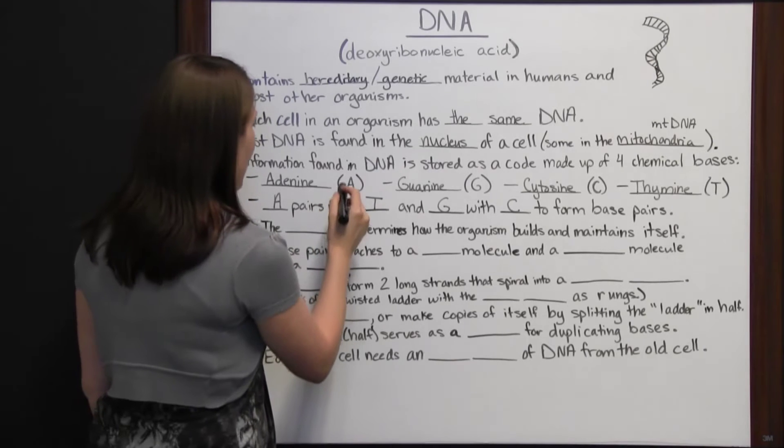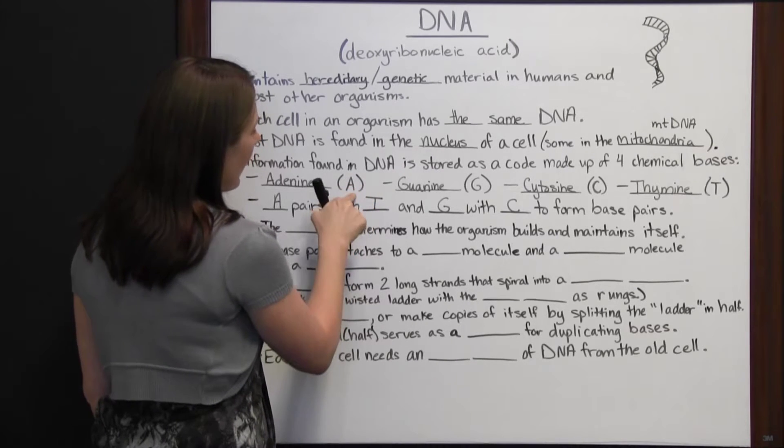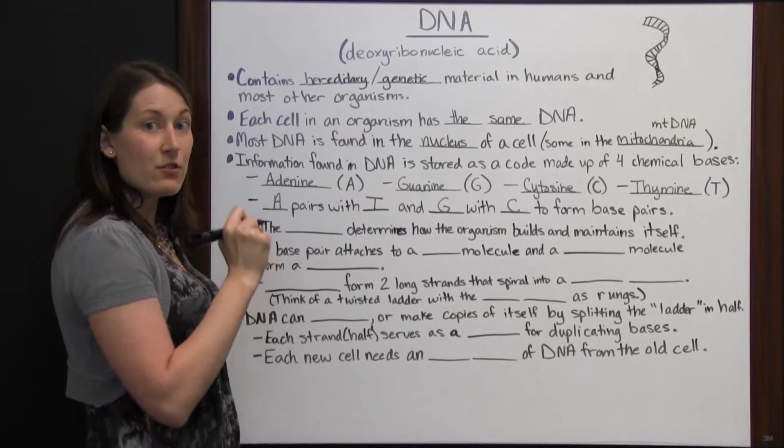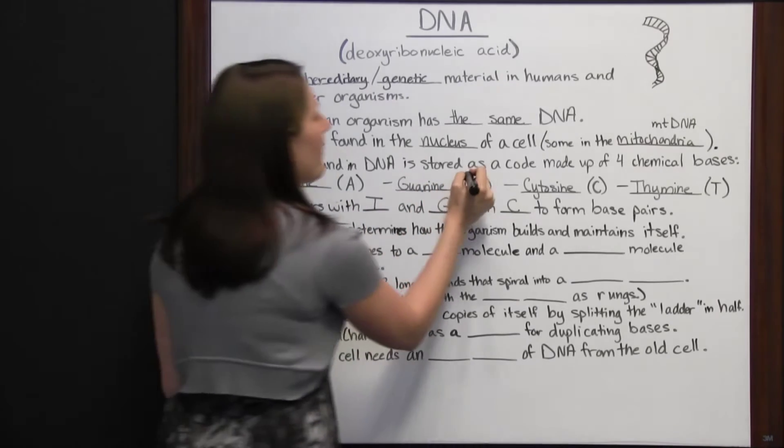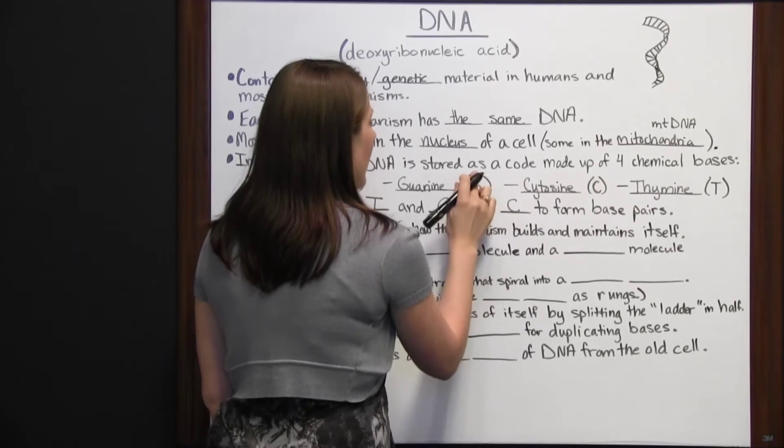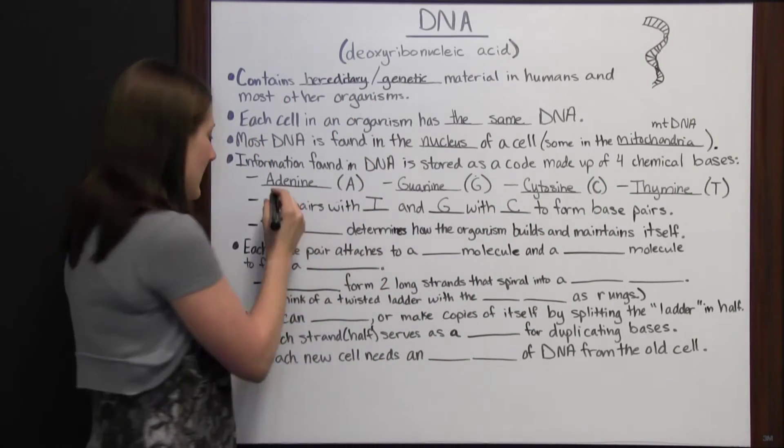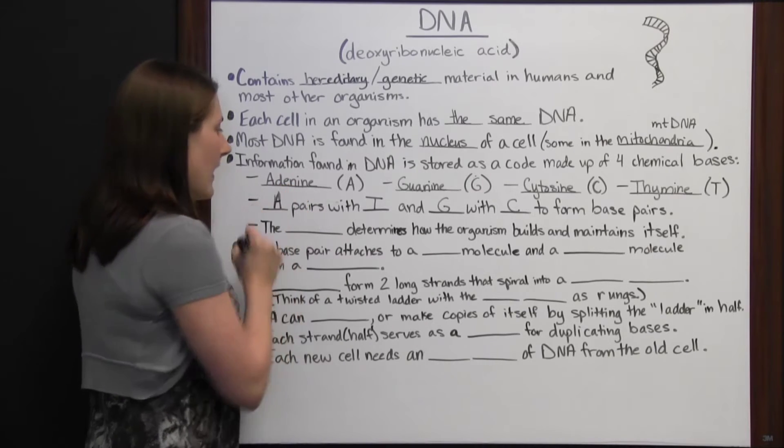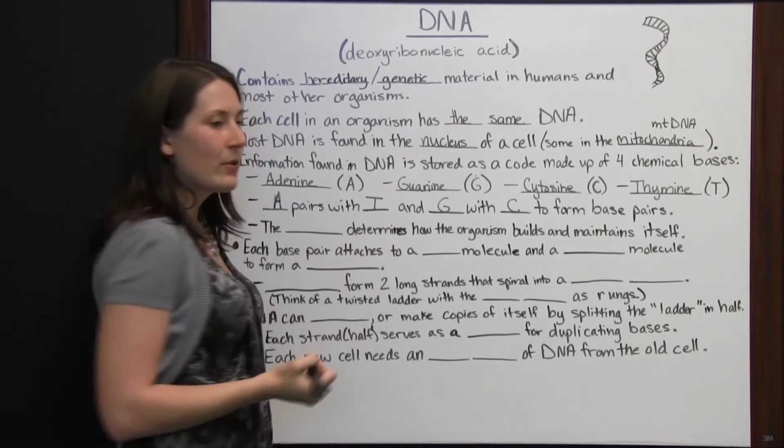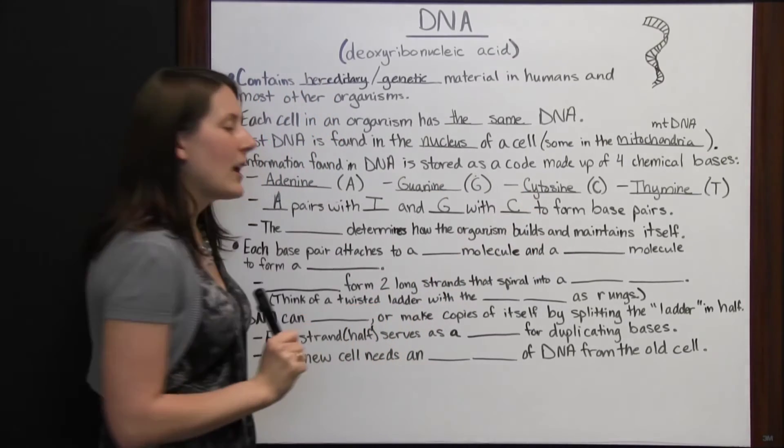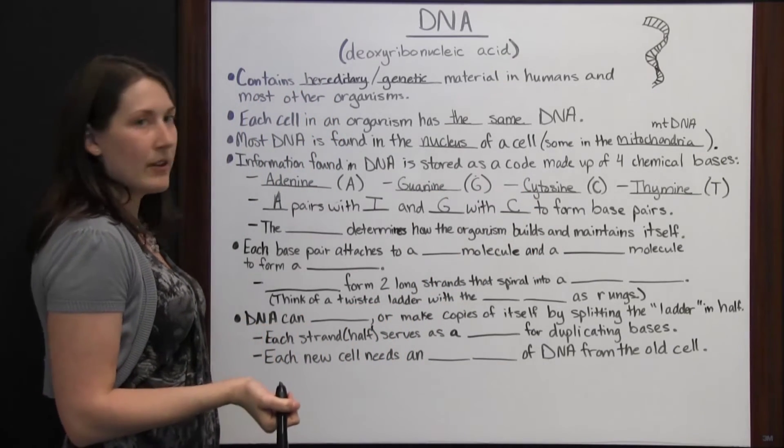A way that I remember that is that the ones with the straight lines in their abbreviation letter, the A and T that can be made with straight lines, go together and the ones that require a curved line go together. That helps me remember that adenine pairs with thymine, these straight lines to form A and straight lines to form T, and guanine goes with cytosine because of the curved shape that it takes to make each of those abbreviation letters.